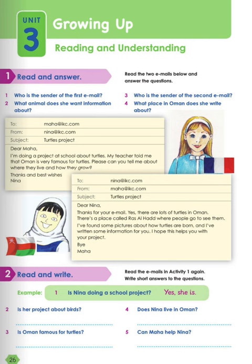Now after we read, let's read the first question again and answer. Who is the sender of the first email? The sender is Nina. Number 2, what animal does she want information about? She wants information about turtles. Number 3, who is the sender of the second email? It's Maha — she was replying to Nina. Number 4, what place in Oman does she write about? She was talking about Ras al-Had.